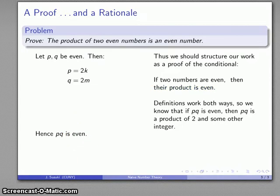Here's why the definitions are extremely useful: they work in both directions. I can use the definition going forward—p and q are even so p is 2 times something, q is 2 times something—but I can also use the definition going backwards. If pq is even, then I know pq is the product of 2 and something else.